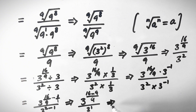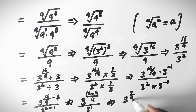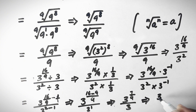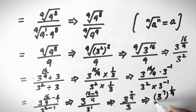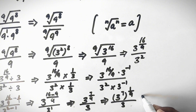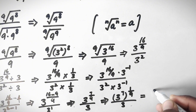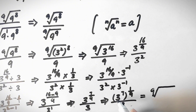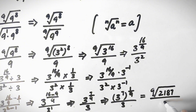So we get 3 to the power 7 over 9, divided by 3. This can be written as the 9th root of 3 to the power 7, divided by 3. Since 3 to the power 7 equals 2187, the final simplified answer is the 9th root of 2187, divided by 3.